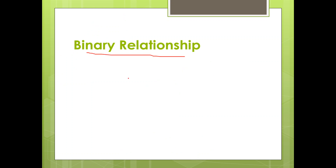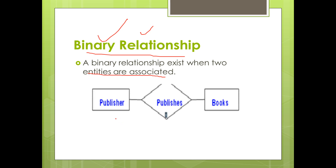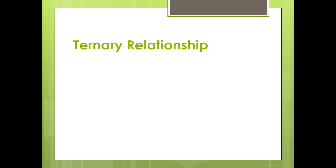Next is binary relationship. A binary relationship exists when two entities are associated. Example: publishers publishes books — here two entities, publisher and book, participate. Next is ternary relationship, where three entities participate in the relationship.